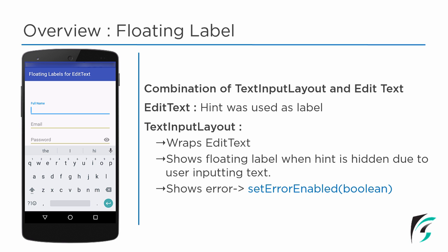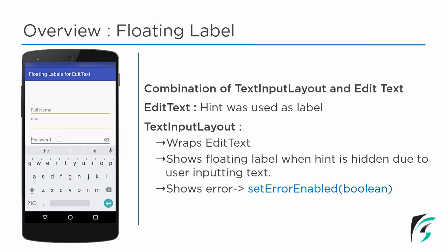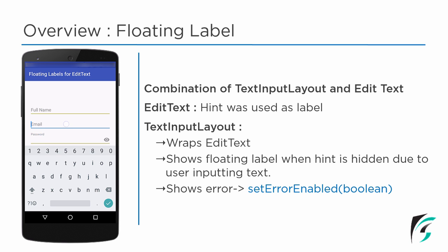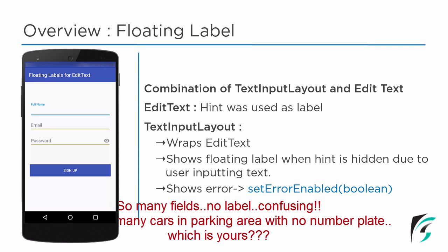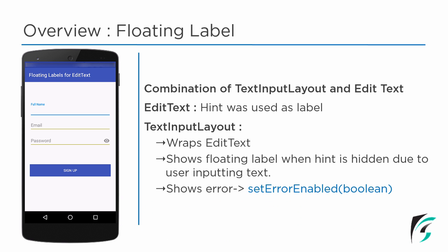When the user starts inputting text, it starts animating by moving to the floating label position. This way, when the user enters something, he won't be confused about what field he is dealing with. If there was no floating label and we had so many text fields, it is most likely that the user would get confused. So here comes Android Material Design with the feature of floating label, which provides a better user experience.